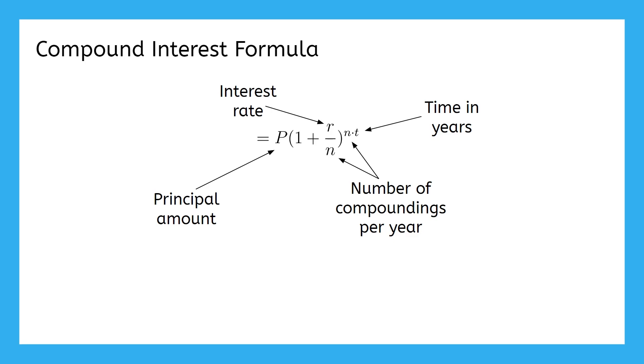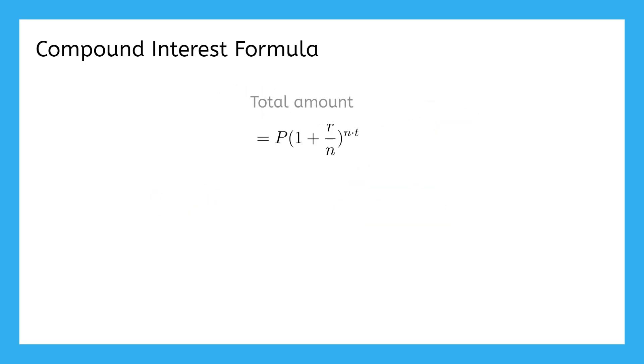By putting all of this together, we can calculate the total amount owed on the loan. If we wanted to know only how much interest is accrued, we would then just subtract the principal from the total.